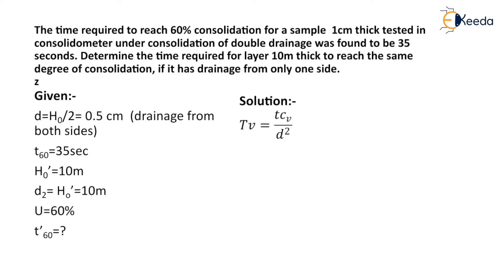We know the formula: Tv equals t multiplied by Cv divided by D², where Tv is the time factor, t is the corresponding time, Cv is the coefficient of consolidation, and D is the drainage path. In both cases the degree of consolidation is the same, that is 60%, so the time factor Tv will be constant in both cases. If the soil samples are identical, the value of Cv will also be constant. Hence, t divided by D² is constant.